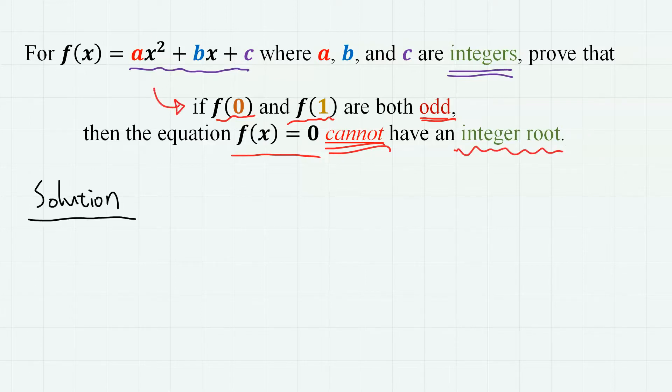So by this given condition, f(0), which is c, is odd, and f(1), which is a plus b plus c, is also odd.